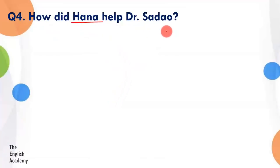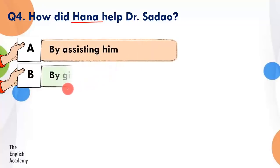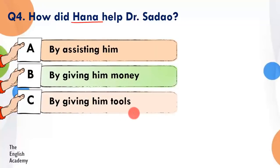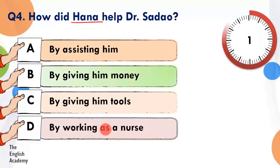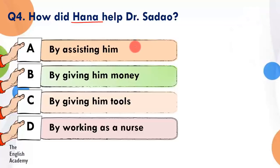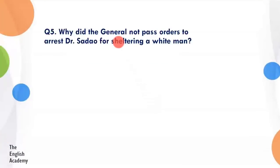Question 4: How did Hana help Dr. Sadao? Option A: by assisting him. Option B: by giving him money. Option C: by giving him tools. Option D: by working as a nurse. The time starts now.